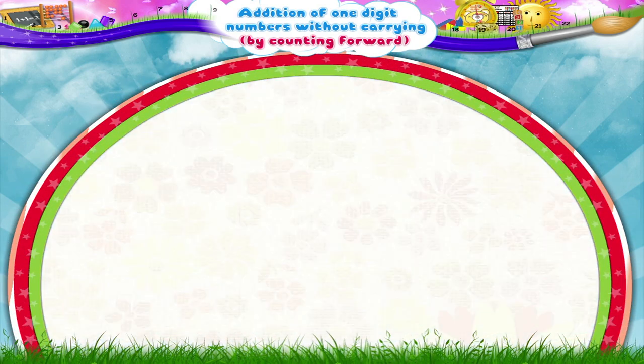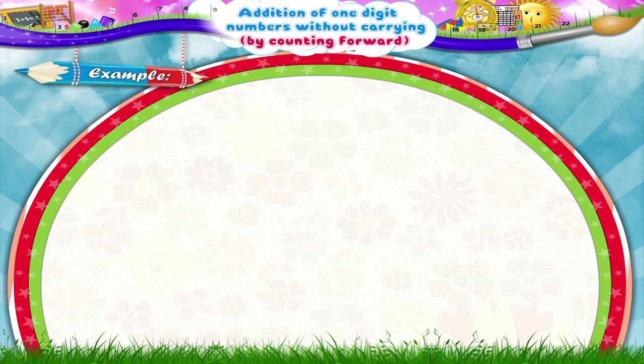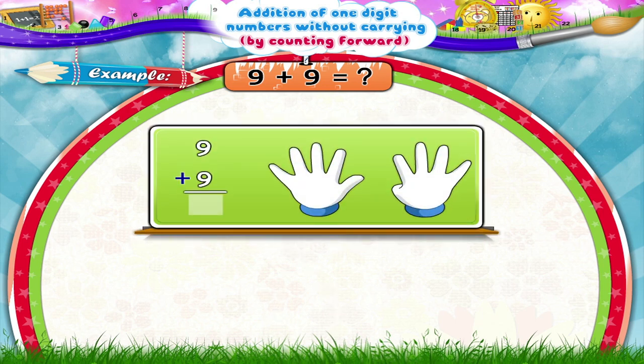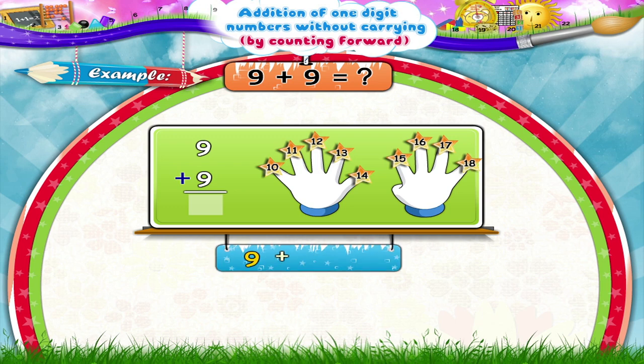Okay? Now here's the next example. Add 9 plus 9. Start counting 9 fingers after 9. Will you do it? Yes. 10, 11, 12, 13, 14, 15, 16, 17, 18. So 9 plus 9 equals 18.